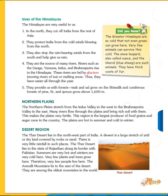Next, the Desert Region. The Thar desert lies in the northwest part of India. A desert is a large stretch of arid or dry land covered by rocks or sand. There is very little rainfall in such places. The Thar desert lies in the state of Rajasthan along its border with Pakistan. Summers are very hot and winters are very cold here. Very few plants and trees grow here, therefore very few people live here.